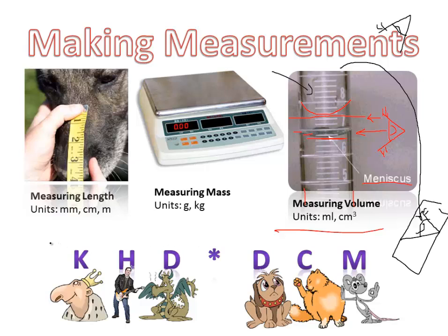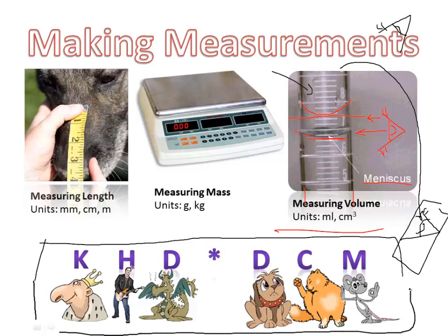Underneath your notes, go ahead and write this down. Write K, leave some space, then H, leave some space, then D, leave some space, then a star, leave some space, then D again, leave some space, then C, leave some space, and then M.